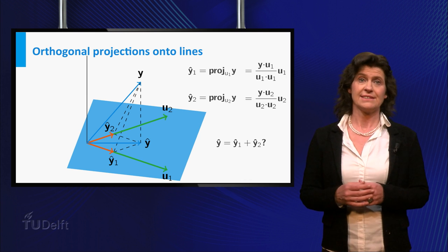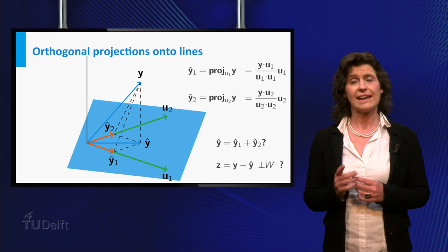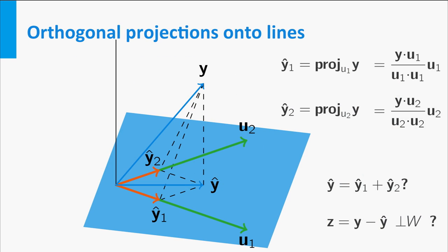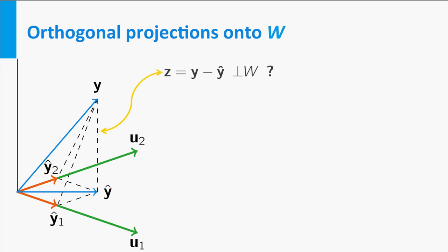Let's check this is indeed true. In other words, let's check that vector Z is orthogonal to W. To check that a vector is orthogonal to a plane, you check that it is orthogonal to the vectors in the basis of the plane.